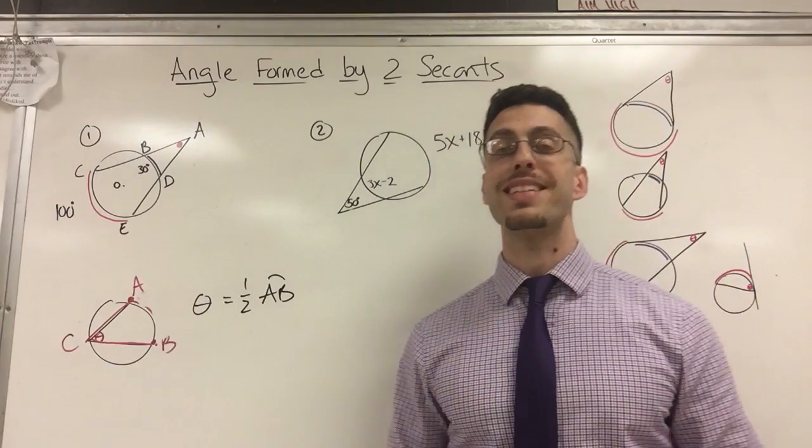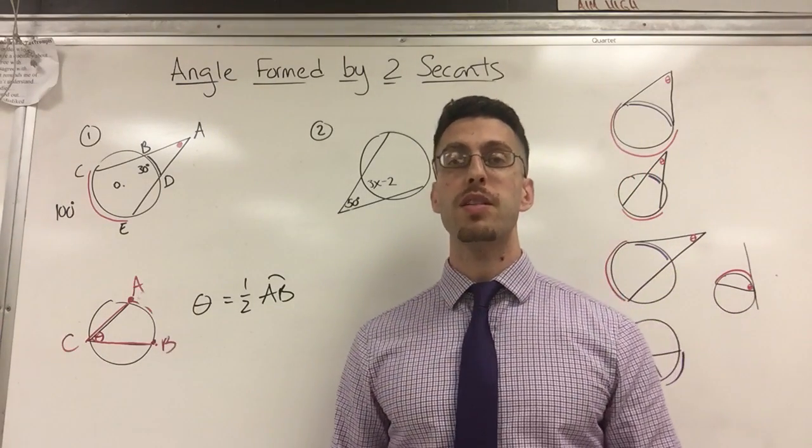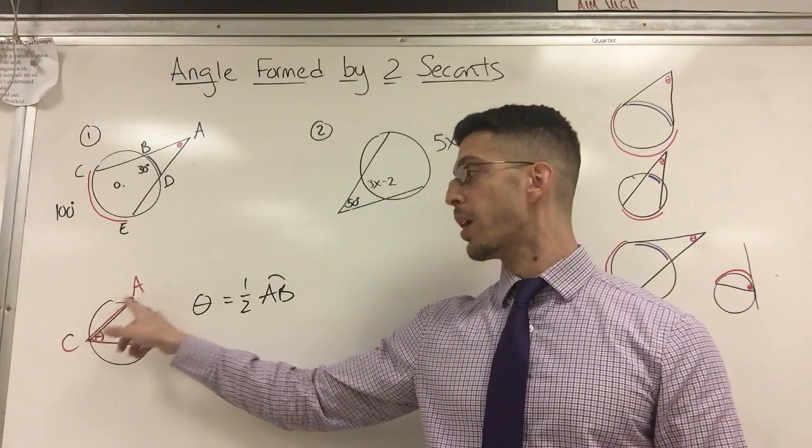Arc AB is the intercepted arc. What do I mean by intercepted? I used to call it the pizza slice. I start from my angle, from C, I follow it all the way out, it hits B, it hits A, and then I follow it all the way out here and it hits B.